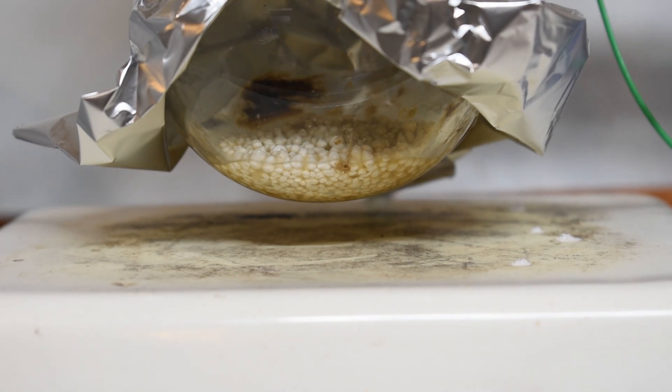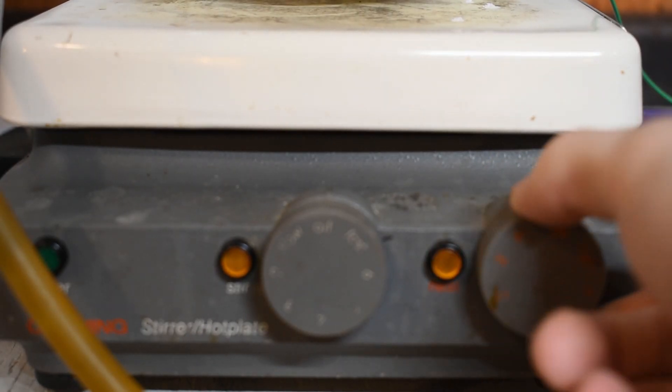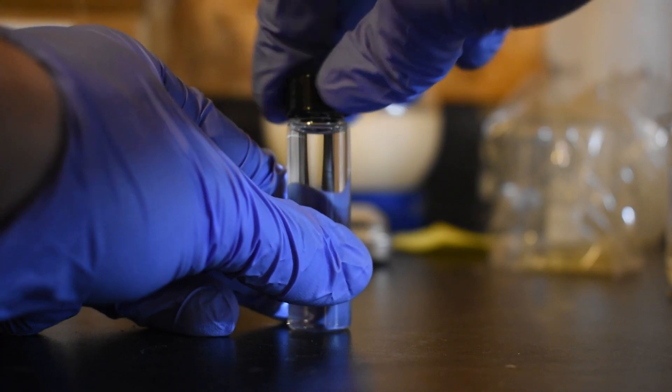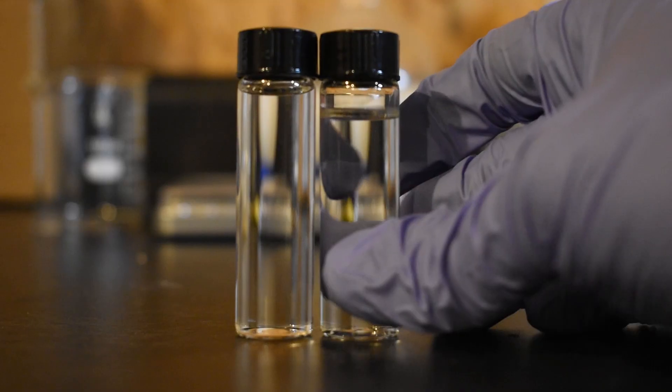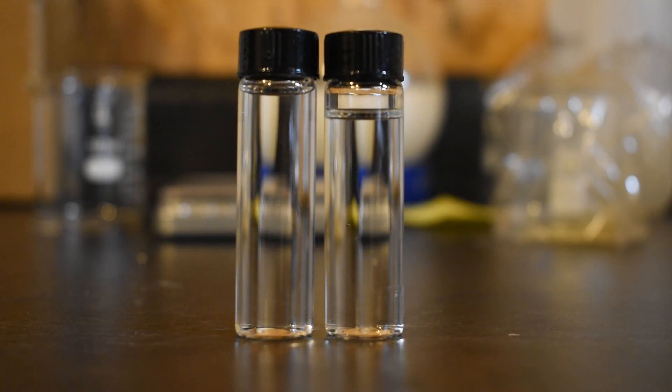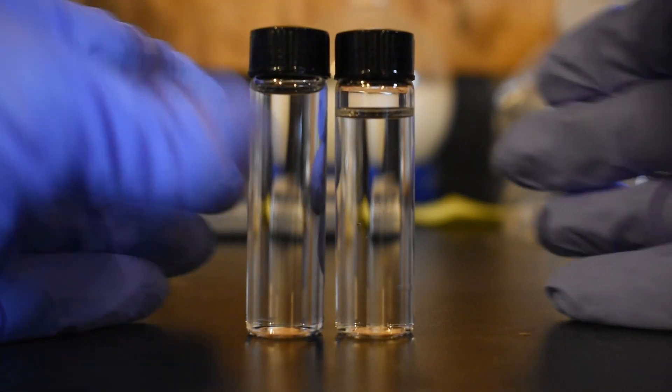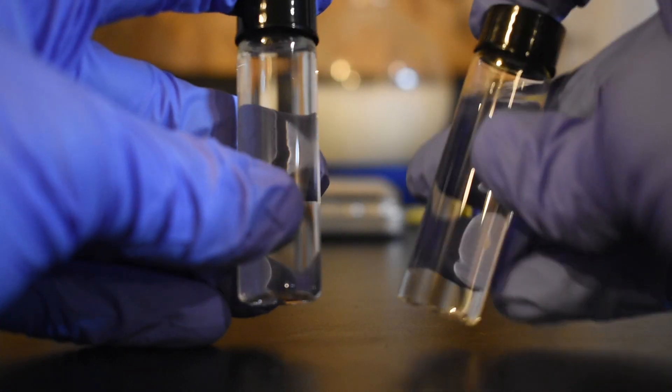As the distillation flask was almost empty, I turned off the heating, and we were left with some pretty nice crystal clear liquid. In the end, I was left with 14.4 grams of isoamyl acetate, which corresponds to about a 41% yield.